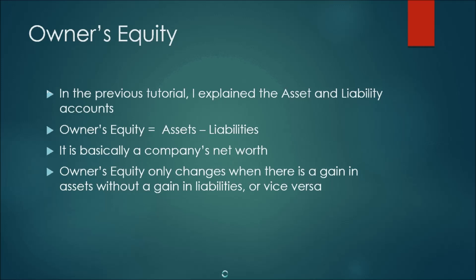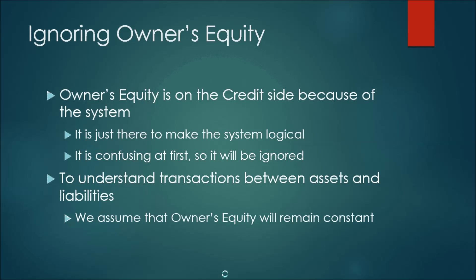In this tutorial, I want to ignore owner's equity, just because assets are on the debit side, liabilities on the credit side, and owner's equity is on the credit side because of the system. It's just there to make it logical, and because it's confusing at first, I'm going to ignore it. So now I'm just going to look at transactions between assets and liabilities, and in these journal examples I'm going to assume that owner's equity will remain constant.